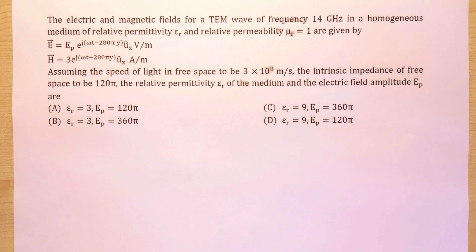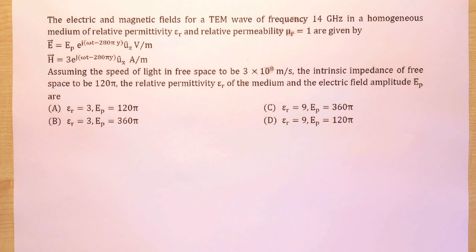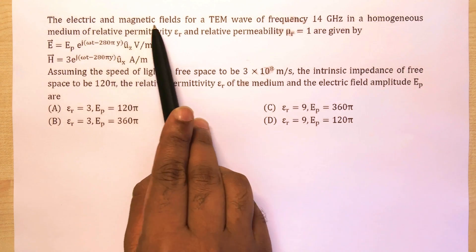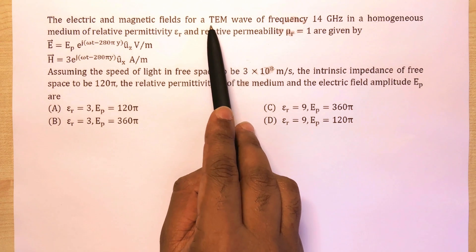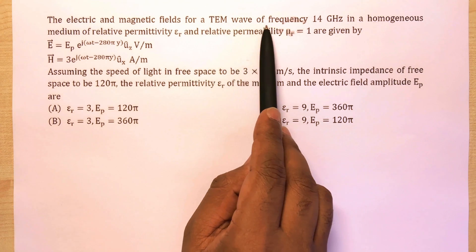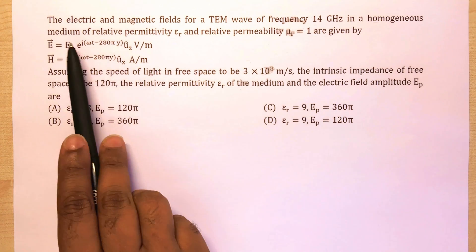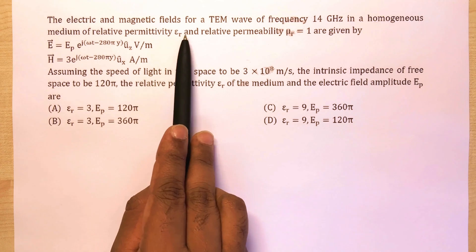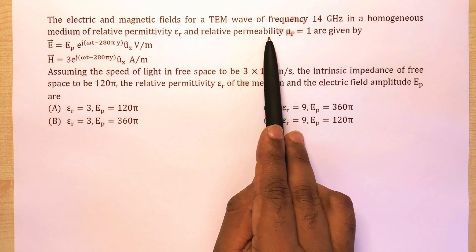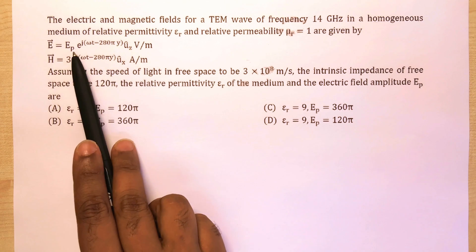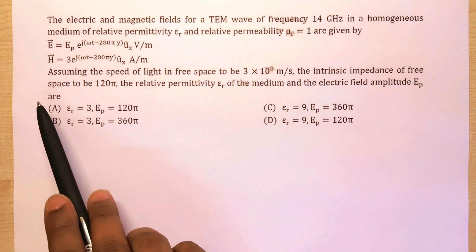Welcome to Vedanta Education. Today I have one more problem from electromagnetic theory, which appeared in GATE 2011 for two marks. It's pretty easy if you know the right technique. The question gives the electric and magnetic fields for a TEM wave (transverse electromagnetic wave) of frequency 14 GHz in a homogeneous medium of relative permittivity εr and relative permeability μr.